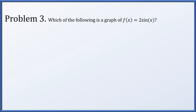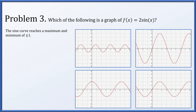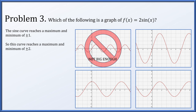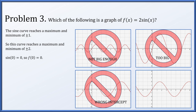For problem 3, which of the following is a graph of f(x) = 2sin(x)? We have four options. The sine curve by default reaches a maximum and minimum of ±1, but this is being multiplied by 2, so we expect the maximum value to be 2 and the minimum to be -2. We can eliminate graphs with max/min of ±1 and ±4. Both remaining curves have max and min of ±2. But sin(0) = 0, so when x = 0 we get 2·sin(0) = 0. We're looking for an intercept of 0, and the only option satisfying this is the one in the bottom right.